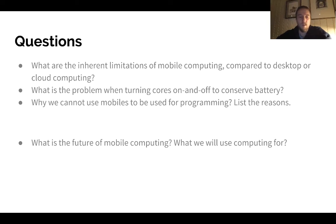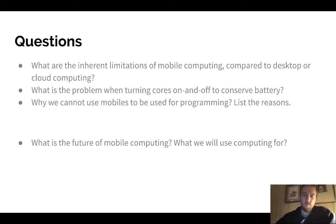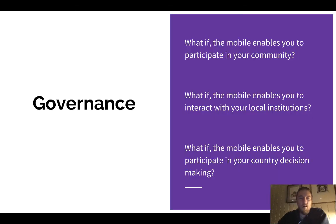There was a question about turning cores on and off to conserve battery — what is the problem with that? And another question about why we cannot use mobiles for programming even though technically we could. List those reasons. The main theme of the lecture is: what is the future of mobile computing? There is no single answer — there are multiple answers. One possible answer we will explore now is the concept of participation. So we'll discuss governance and the use of technology for governance. Through Facebook and similar platforms, you are already part of a community in some way.